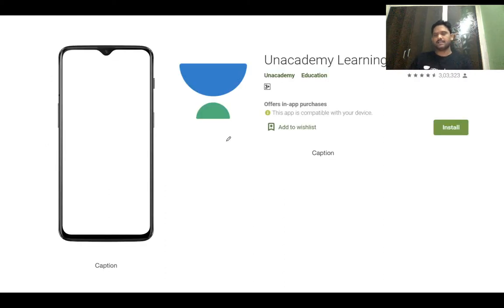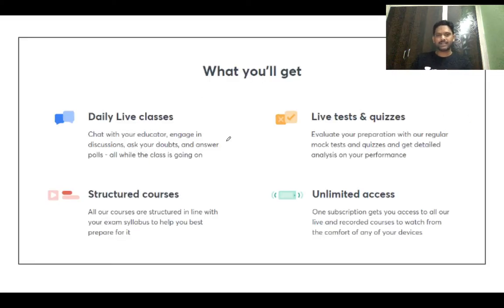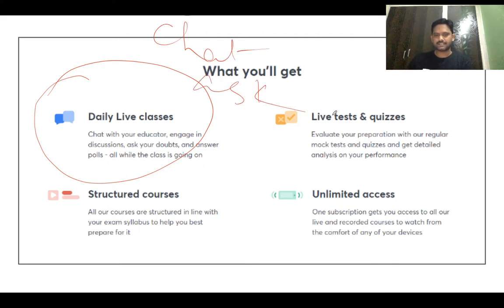You need to download and subscribe to the Unacademy Learning App. Unacademy is India's largest and finest platform for online civil services education. They have made rapid progress over the past couple of years and have produced several ranks. You get a number of benefits by subscribing — the most important being daily live classes where you can chat with your educator, ask questions on issues being discussed, and answer questions while the class is going on.